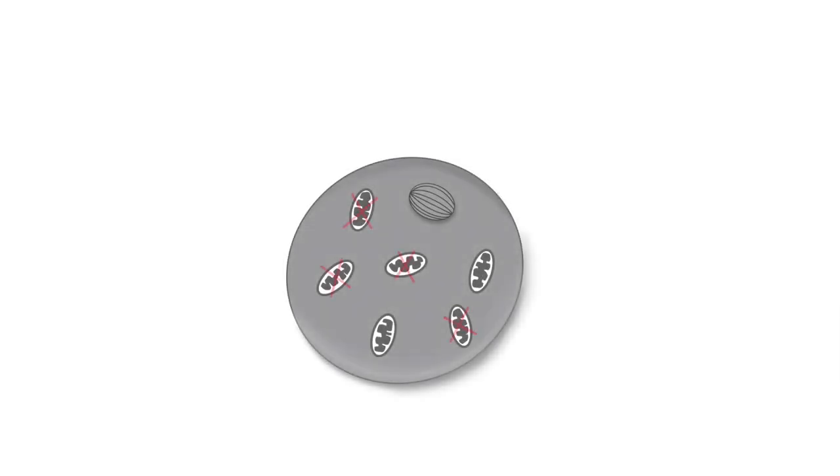The pronuclear transfer or PNT technique is quite similar. We will start off with the patient's egg that has the affected mitochondria. However, we first fertilize the egg with the partner sperm, resulting in a zygote with male and female pronuclei. The zygote stage in mammals is characterized by the presence of two pronuclei, each clearly visible and containing a haploid or half chromosomal set of nuclear DNA from both the egg and the sperm.